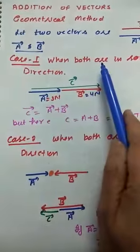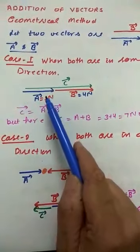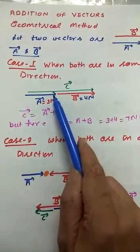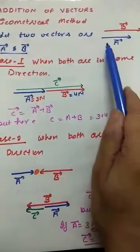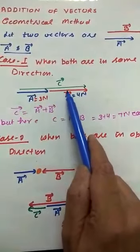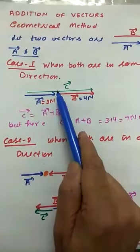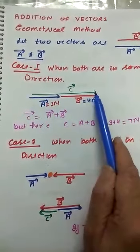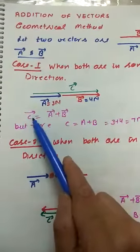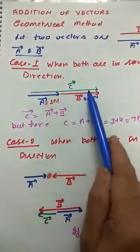To add vectors A and B geometrically: first, draw vector A as a 3 cm long line. Then, from the head of vector A, draw vector B in the same direction as a 4 cm long line. The rule for the resultant is: draw from the tail of the first vector to the head of the last vector — that is the resultant.